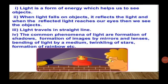Light is a form of energy which helps us to see objects. When the light falls on an object, it reflects the light, and when the reflected light reaches our eyes, then we see the objects. Light travels in a straight line. The common phenomena of light are formation of shadows, formation of images by mirrors and lenses, bending of light by medium, twinkling of stars, formation of rainbow, etc.